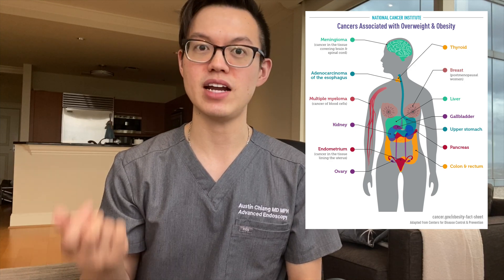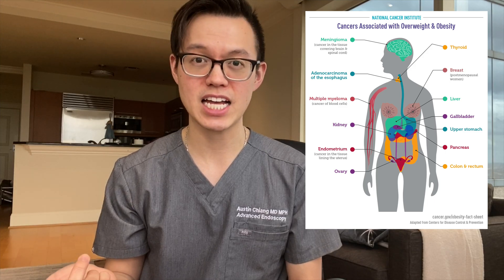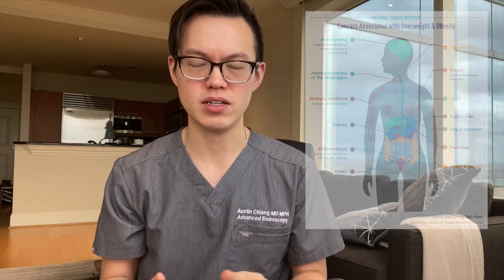There are 13 different types of cancers related to obesity, as identified by the International Agency for Research on Cancer, and highlighted by the American Cancer Society and the National Cancer Institute. These 13 types include breast cancer, colon and rectal cancer, endometrial cancer, esophageal cancer, gallbladder cancer, kidney cancer, liver cancer, ovarian cancer, pancreatic cancer, stomach cancer, thyroid cancer, multiple myeloma, and meningioma. Let me know in the comment section below if you knew about any of these cancers being associated with obesity.